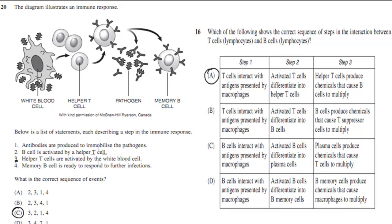The reason why: what happens first is helper T cells are activated by white blood cells — these could be B lymphocytes or macrophages. Then when T cells are activated, they activate the B cells. B cells produce antibodies, and after the infection is killed, memory cells are produced as the last step — that's why C is correct. For the second question, T cells interact with pathogens presented by macrophages. Once activated, they differentiate into more helper T cells, which produce chemicals — interleukins — to activate B cells. So the sequence is: macrophages activate T cells → T cells differentiate into helper T cells → helper T cells activate B cells → B cells produce antibodies. That's why A is correct.